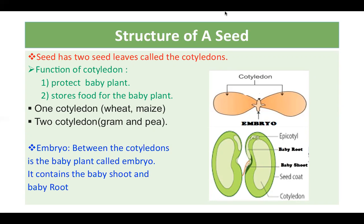Seeds which have one cotyledon are called monocot. Examples are wheat and maize — if you take wheat, you will see it does not have two cotyledons and cannot be divided into two equal parts. The second type is two-cotyledon seeds, called dicot, like gram and pea, where you can easily see the seed has two cotyledons.